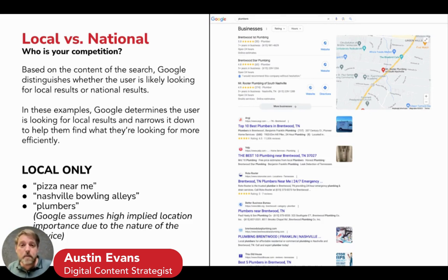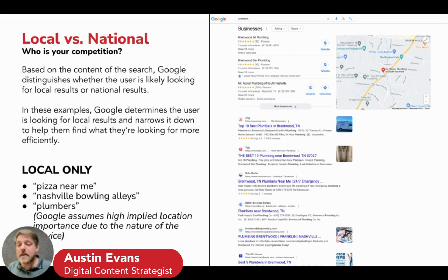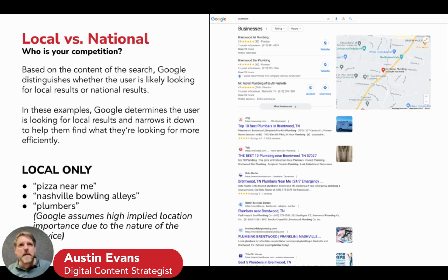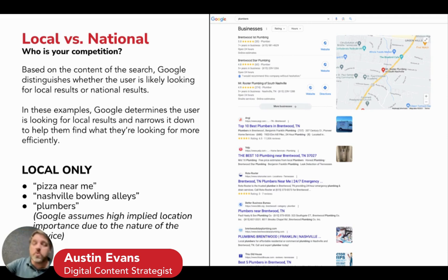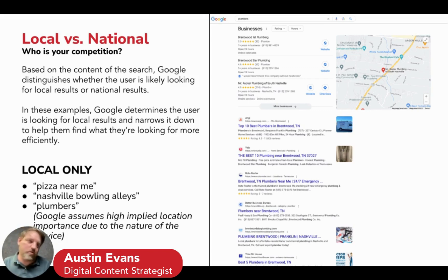Let's talk local versus national, because it really does make a huge difference in how you approach SEO. Some searches, Google understands you only want local results — 'pizza near me,' 'Nashville bowling alleys.' And sometimes, even without specifying location, if Google understands the thing you're searching is best served by someone local, it will only show local results. 'Plumbers' — whether or not you tell it where — will only return plumbers in your area, because a plumber the next state over isn't going to do you any good. This is what we call implied location importance.